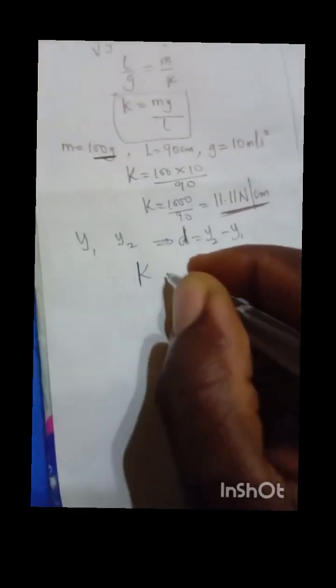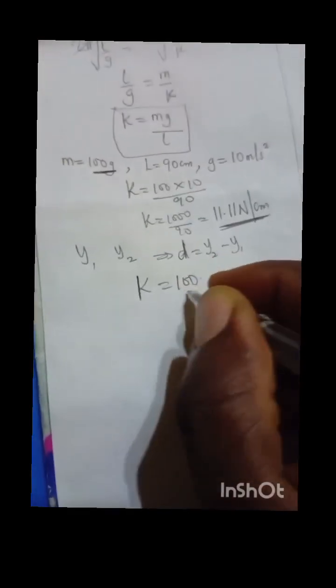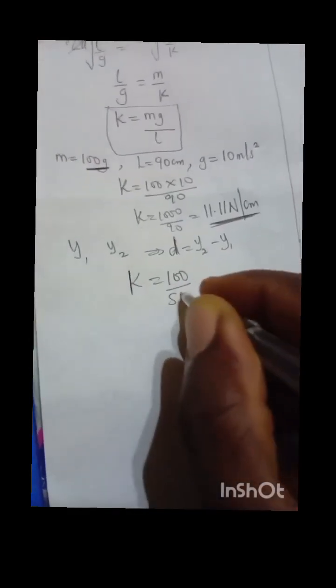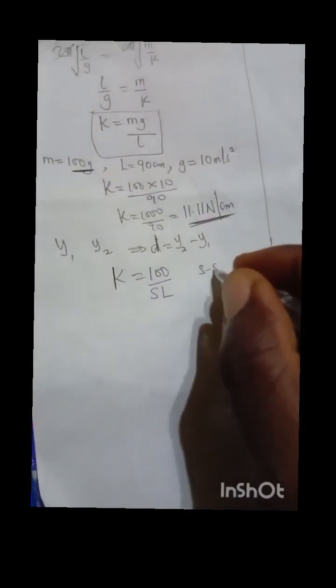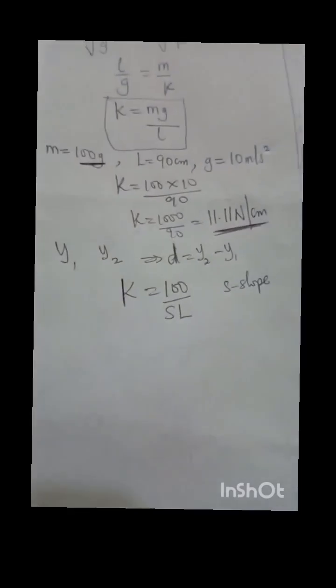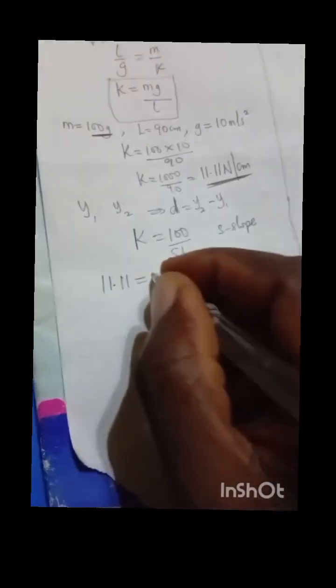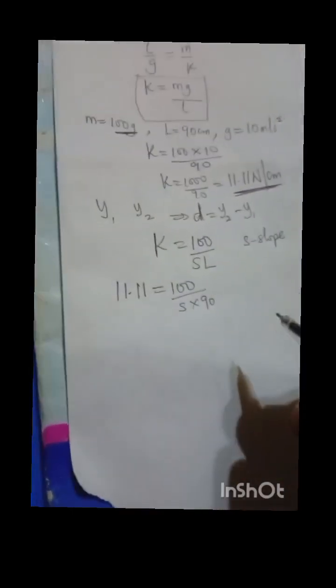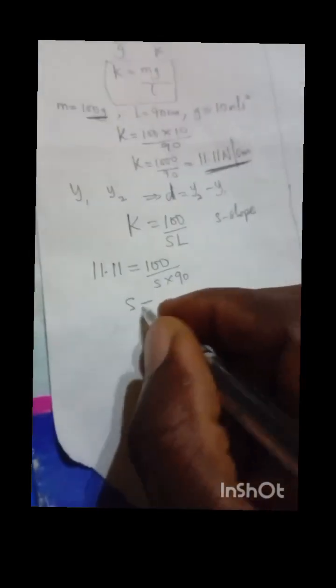Let's say in the question they are bringing K in this format: K = 100 / (S × L), where your S is slope. We have not plotted any graph, we don't have any slope, but we have gotten our K. We can move to say that 11.11 = 100 / (S × 90).